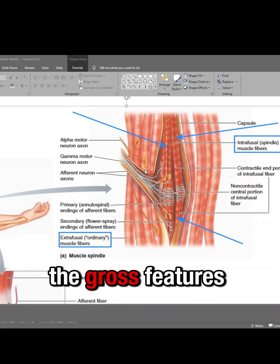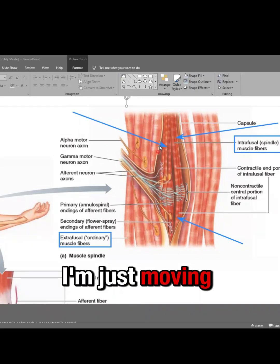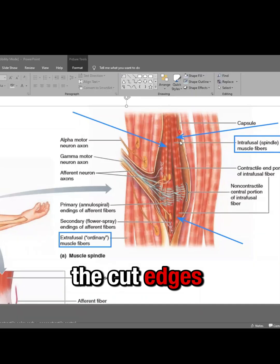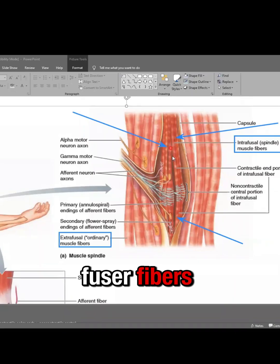So I'm just telling you the gross features here. I'm just moving my cursor on the cut edges of the spindle structure, exposing the intrafusal fibers.